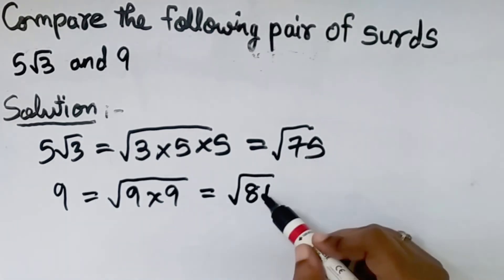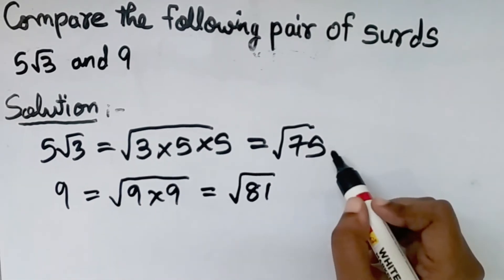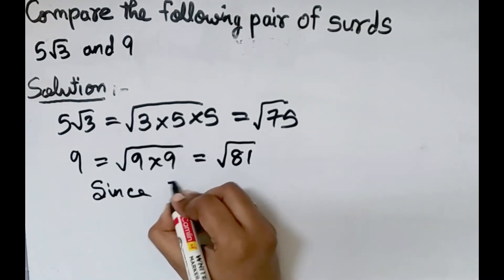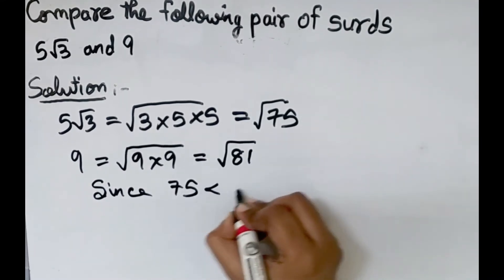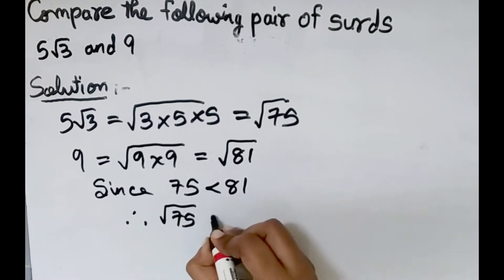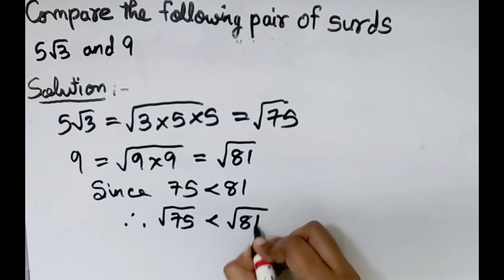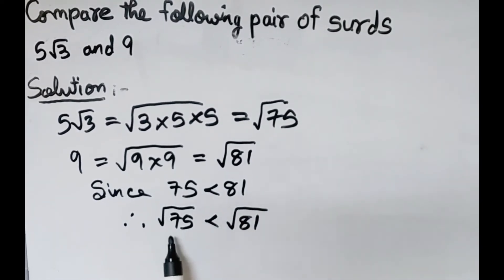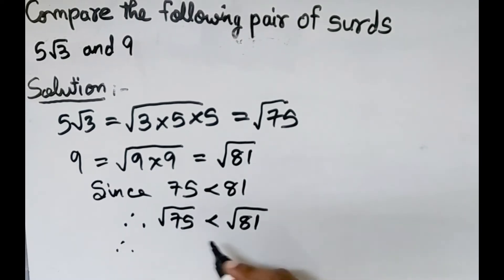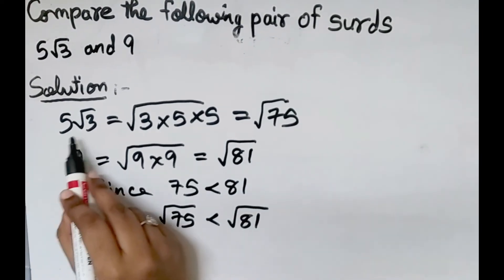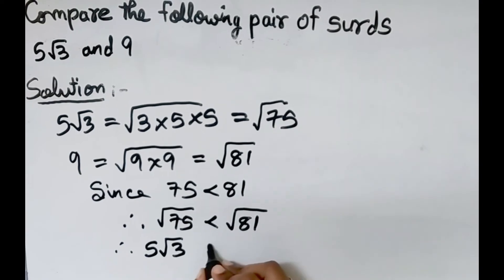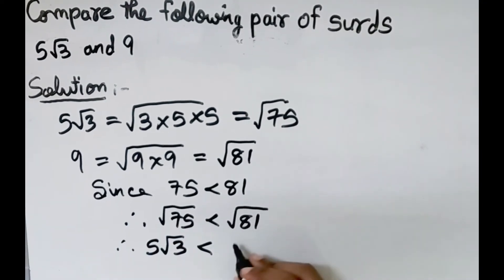Now the order of both is the same and we can compare. Since 75 is less than 81, therefore square root of 75 is less than square root of 81. Square root of 75 is 5 root 3, and square root of 81 is 9. Therefore 5 root 3 is less than 9.